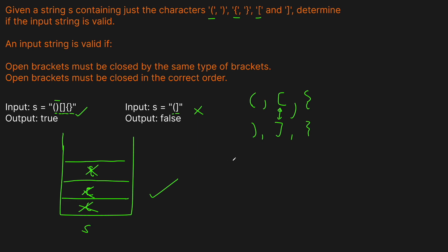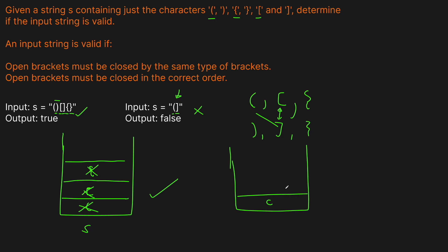Let's look at the invalid example. We take the left parentheses because it's an opener and put it in the stack. Then we get a right bracket, and we're trying to close a left parentheses with a right bracket — obviously they don't match. So we cannot remove it, therefore this is not a valid parentheses string.